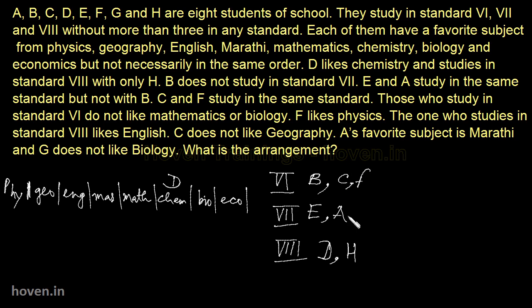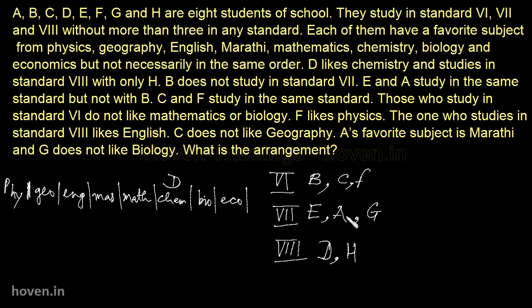So with this, A, B, C, D, E, F, G — one of them is left and that is certainly going to come into standard 7. So all persons have been fitted into the standards now. One part of our job is almost over.